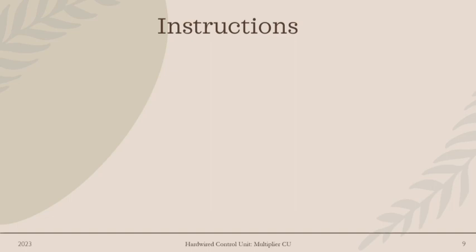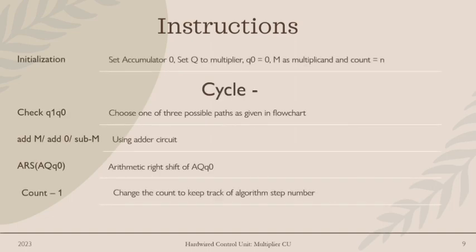The multiplication is performed in many cycles. Each cycle consists of multiple steps. The first step is to check the values of Q1 and Q0 to decide whether A plus M or A minus M is to be performed. The value of minus M is obtained from the 2's complement circuit. The adder circuit adds A with M or minus M. After addition, the arithmetic right shift is performed by the multiplier control unit.